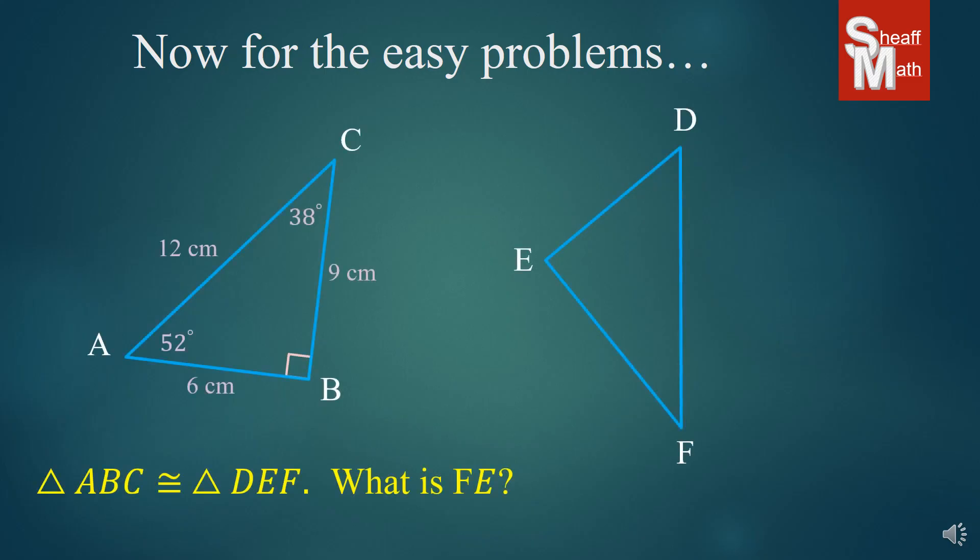All right, let's say that you are given this problem right here. We have triangle ABC is, again, congruent to DEF. And we're now asked to find FE, and so that is the length of that side right there.